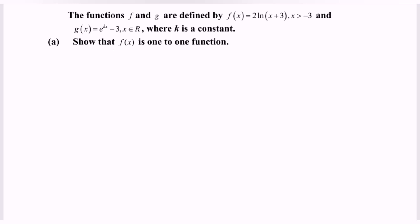The functions f and g are defined by f(x) = 2ln(x+3), where the domain is x greater than negative three. And g(x) = e^(kx-3), where x is all real numbers and k is a constant.